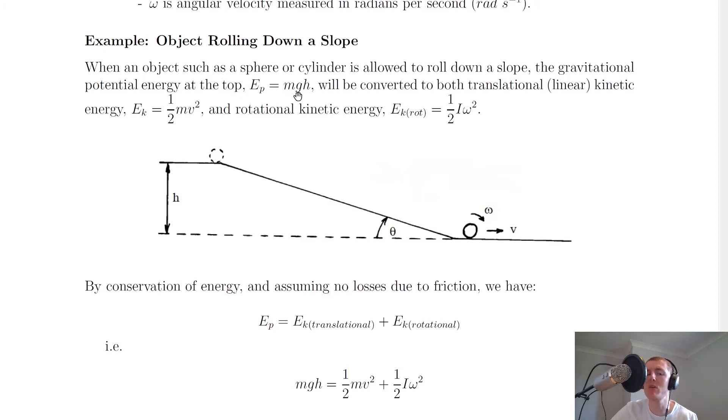...will be converted to both translational (linear) kinetic energy, EK = (1/2)mv², and rotational kinetic energy, which we've just seen as EK_rot = (1/2)Iω².